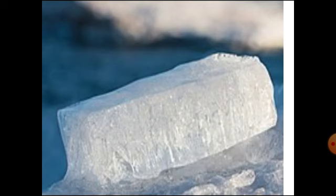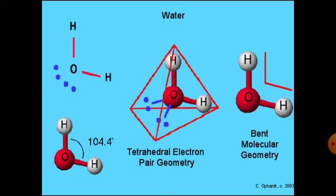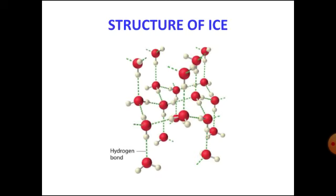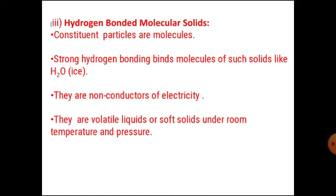Next, hydrogen bonded solids. Consider the three states of water: ice, water, and water vapor. The shape of water is a bent shape. In the structure of ice, the red ball is oxygen and the white ball is hydrogen. Each oxygen atom is tetrahedrally surrounded by four bonds — two hydrogen bonds and two covalent bonds. These solids are called hydrogen bonded solids.